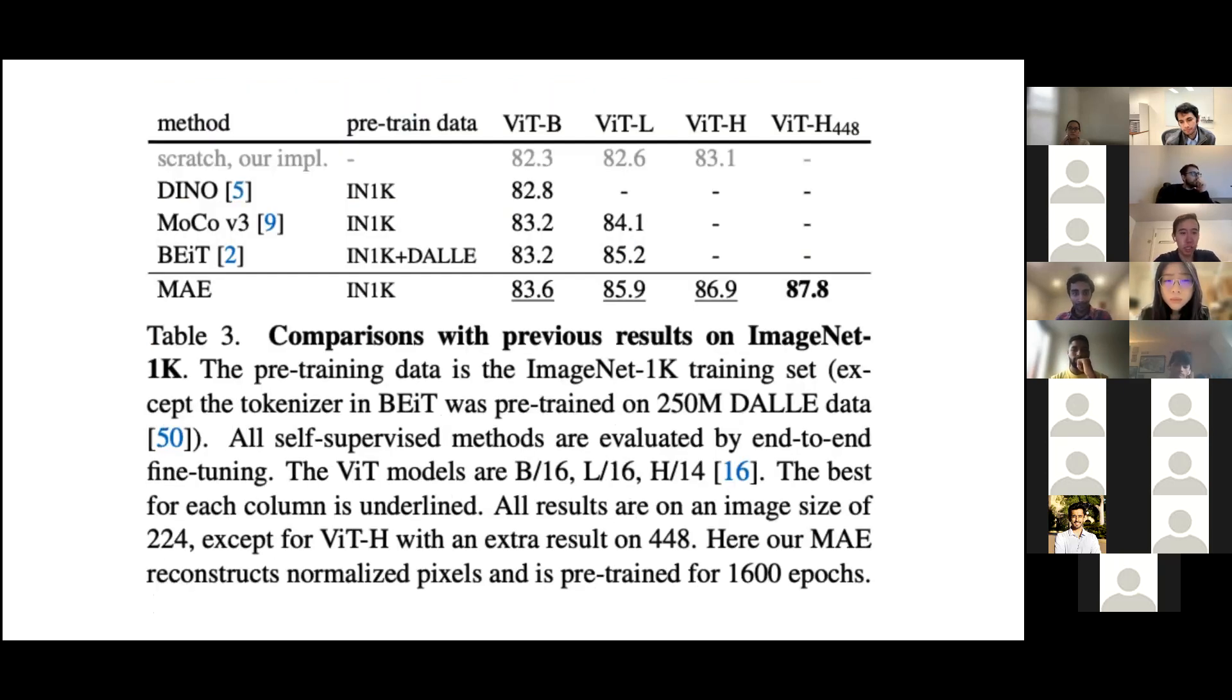The next thing they look at is comparison with self-supervised pre-training methods. They compare their masked autoencoding method against previously used pre-training methods such as DINO, MoCo, or BEIT. They find their method performs pretty well, and most importantly, as you increase the size of your vision transformer, your performance is also going up. This is important because you want to make sure your models are not overfitting the data they're being trained on. We can see that even though we're increasing these sizes, we're still not overfitting and getting good performance on our eventual task.